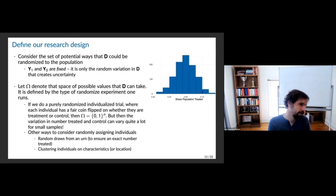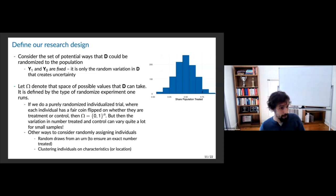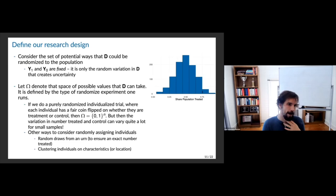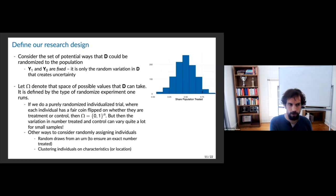If there are 30 of us, I put 30 balls into an urn — 15 red, 15 black. For every person, I draw: if red, you're treated, then I remove the ball and continue. This is sampling without replacement — I'll get exactly 15 treated, but it's still randomly assigned. There are also other ways to do this — clustering on characteristics or location — not just pure coin flips. The key point is: everything you do to influence the probability of assignment affects the omega probability space, which then affects your estimator.